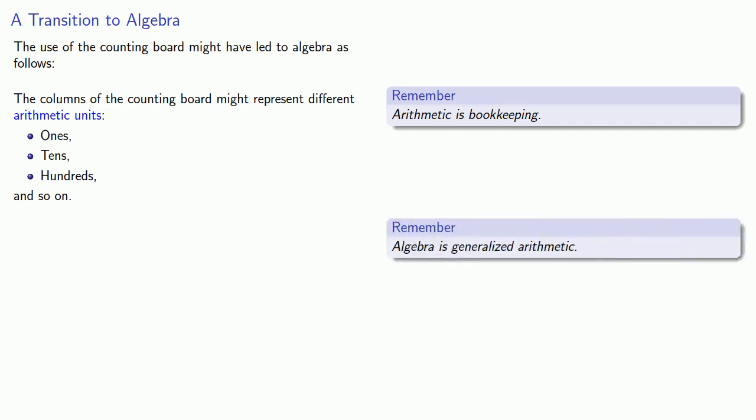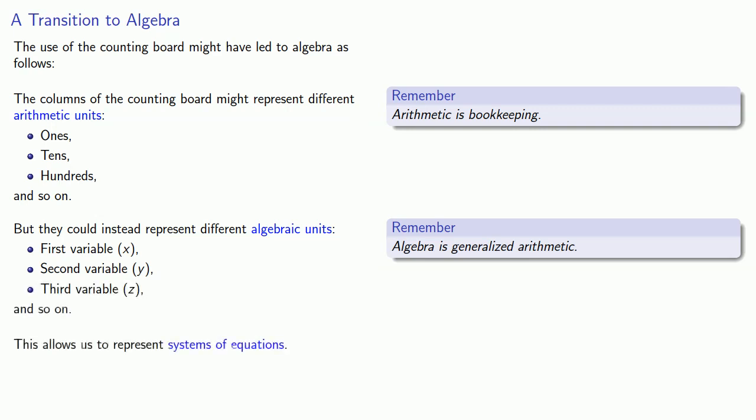But algebra is generalized arithmetic. And so they could instead represent different algebraic units: a first variable x, a second variable y, a third variable z, and so on. And this allows us to represent a system of equations on the counting board.